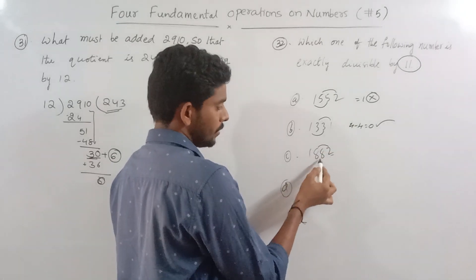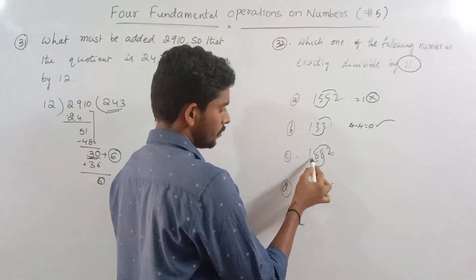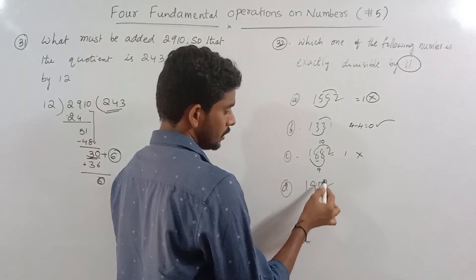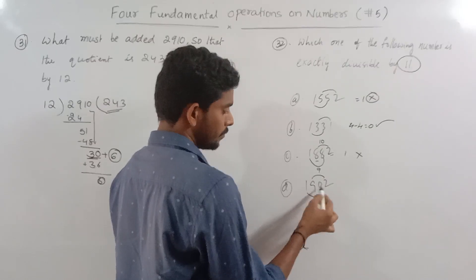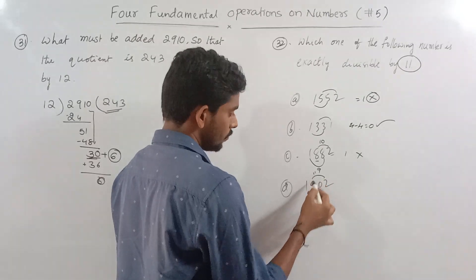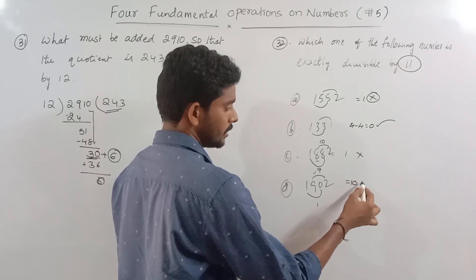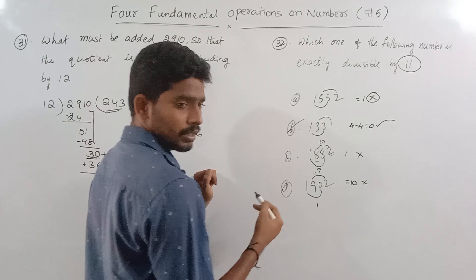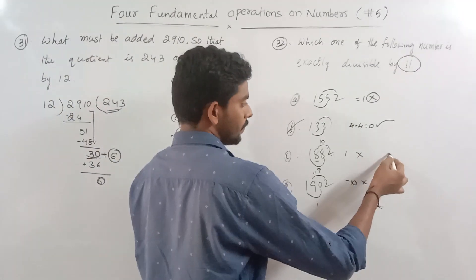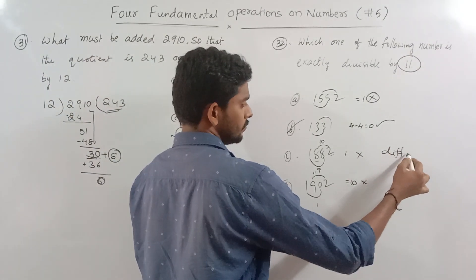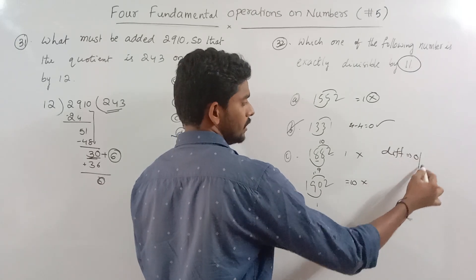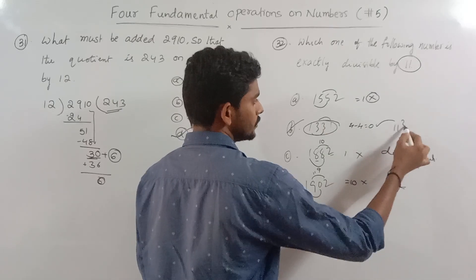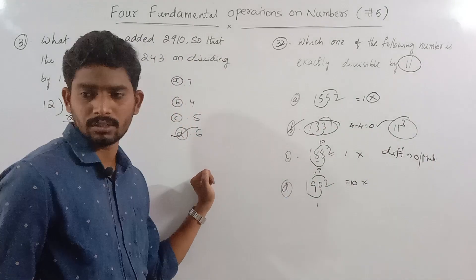Let's check the next one: 2 plus 8 is 10, so this is not divisible by 11. Next: 9 plus 2 is 11, 1 plus 0 is 1, so check the difference. Then: 8 plus 0 plus 5 plus 0 equals 13, and 0 plus 7 is 7, difference is 6 — not divisible. The one where the difference is 0 or 11 is divisible.